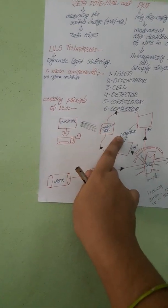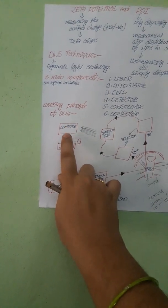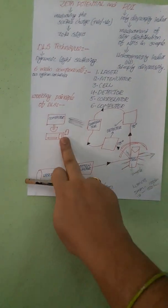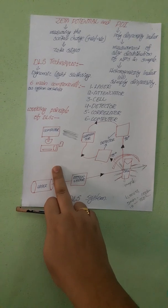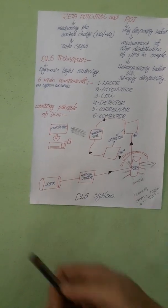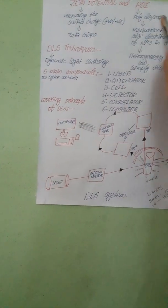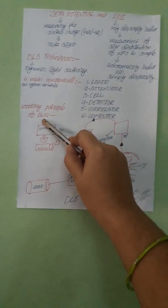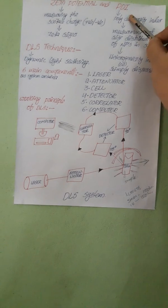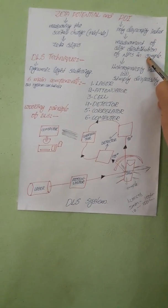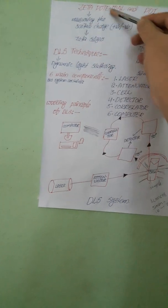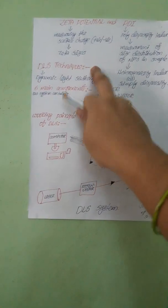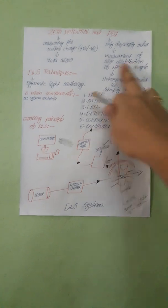The correlator information will pass to the computer. This computer contains a special zetasizer software, which will analyze the data and give information regarding the size distribution of the particles and also the surface charge of the particles. This zetasizer software gives information about the polydispersity index — that is, the size distribution of nanoparticles in the sample — and also measures the surface charge of the particles.